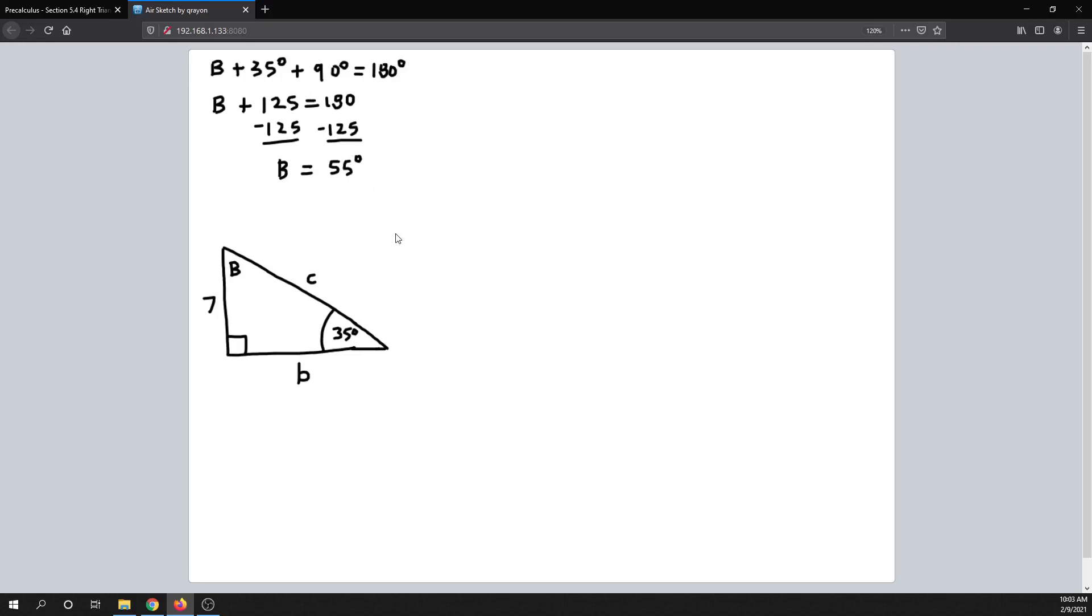Okay, all right, so that's B, and we still need to find lowercase b, little b, and c. All right, so how we're going to do that is using some trigonometry and the trigonometric ratios.